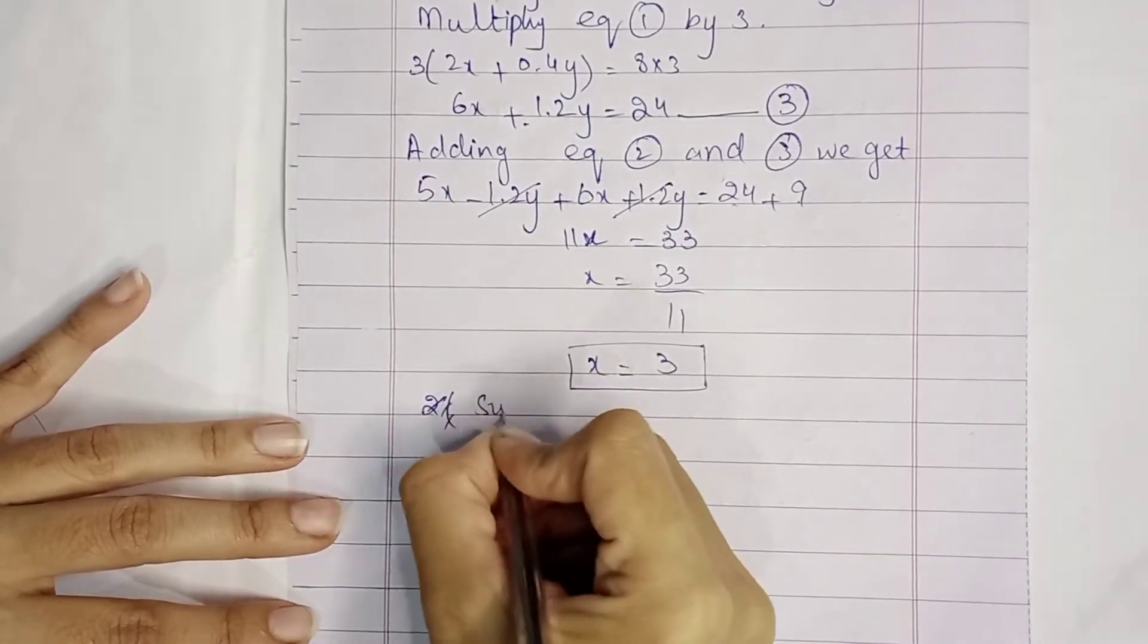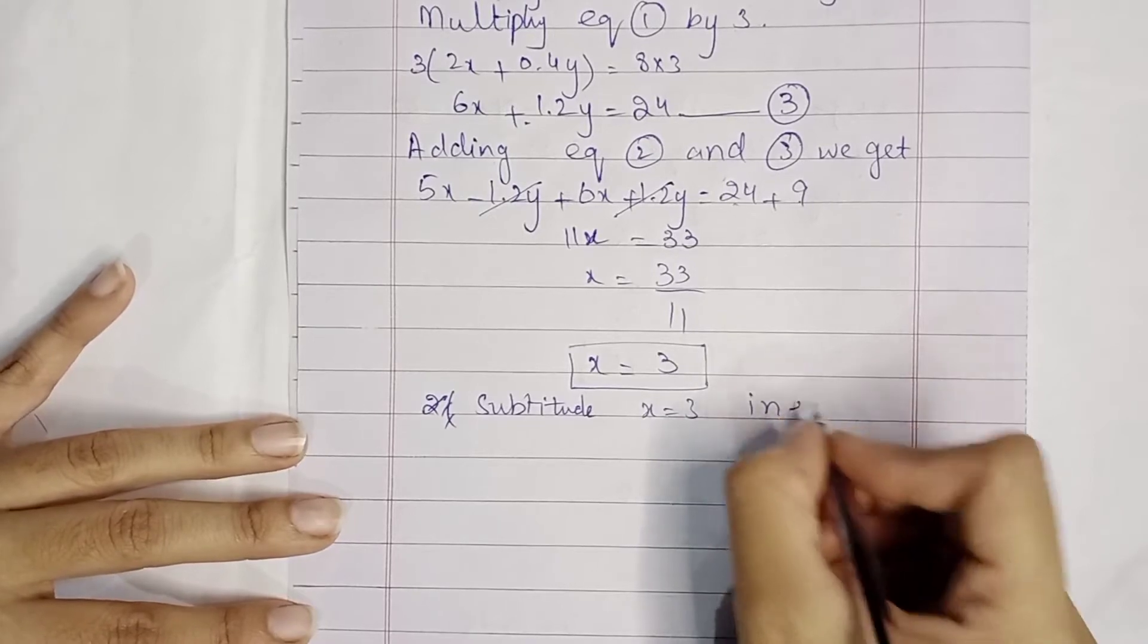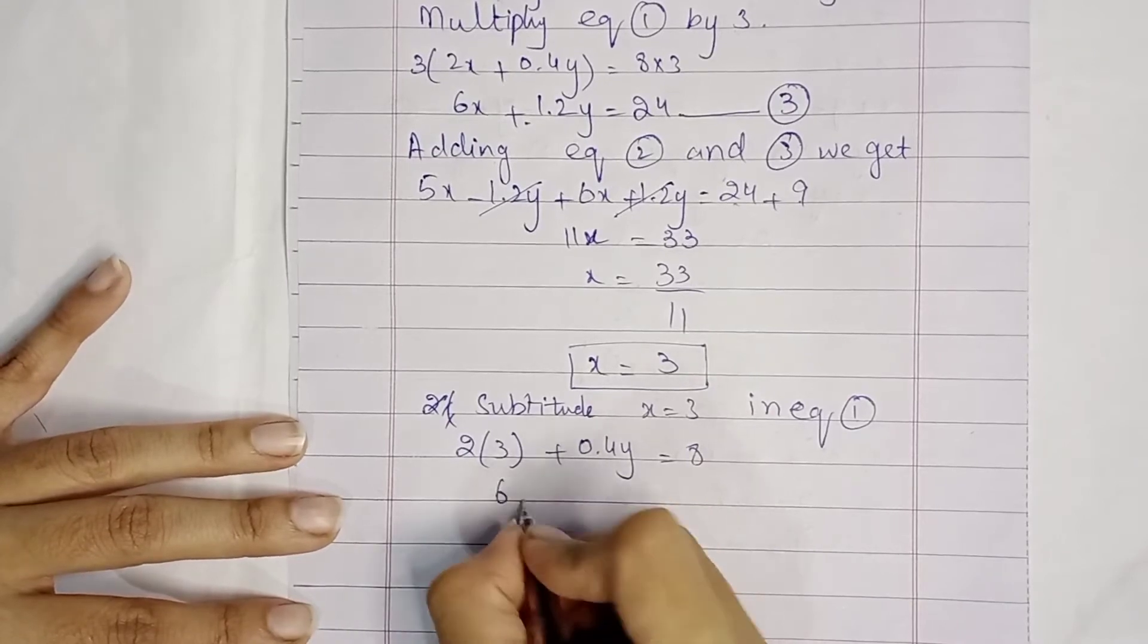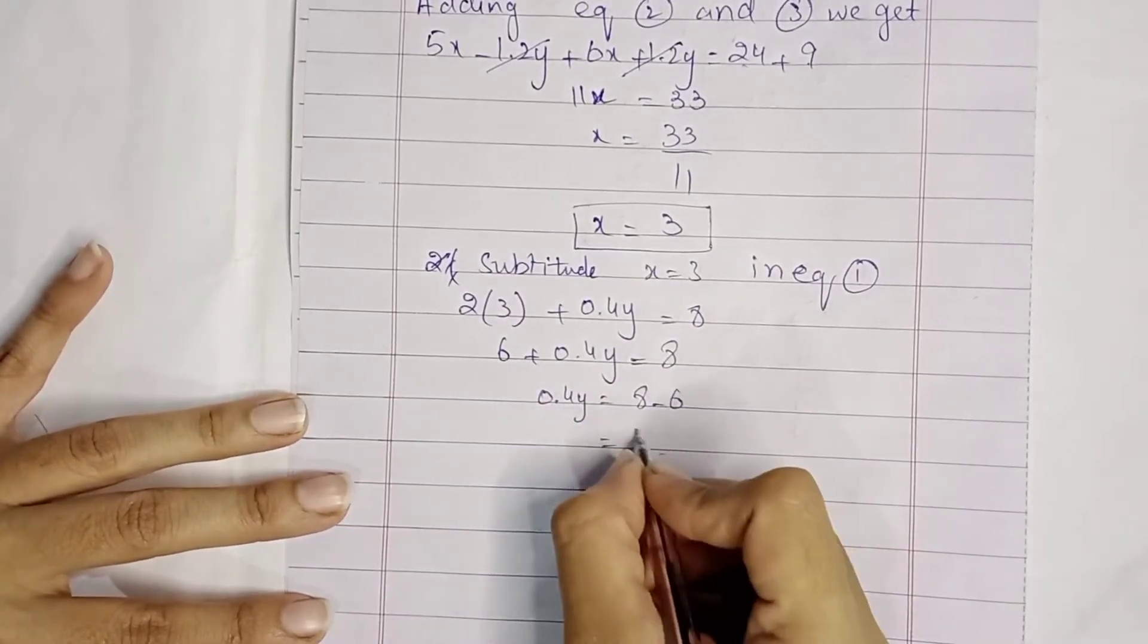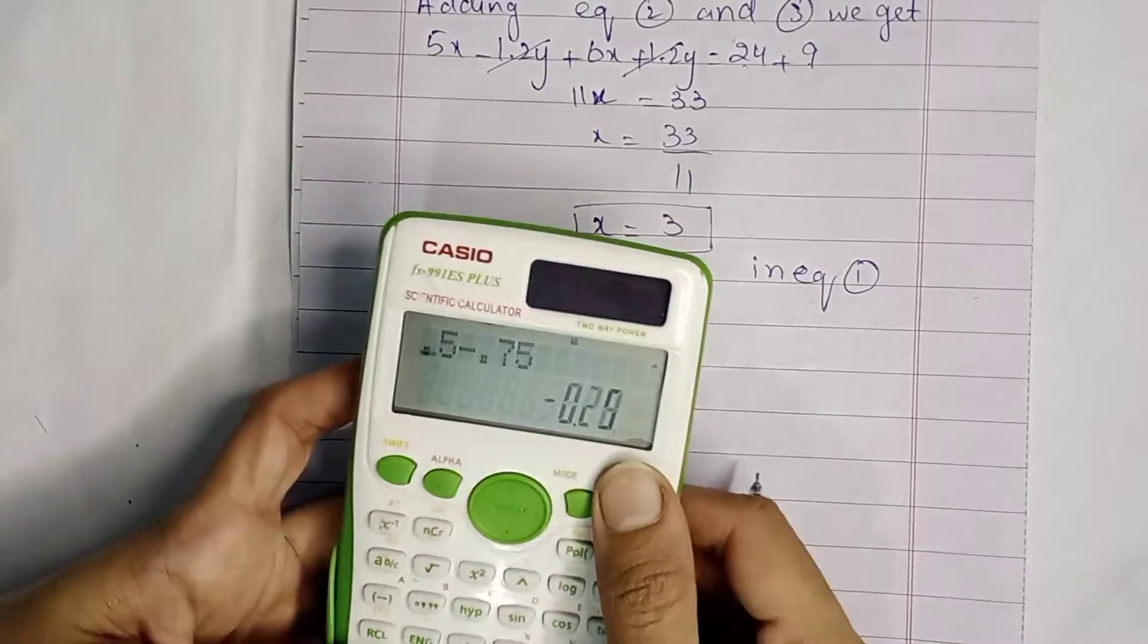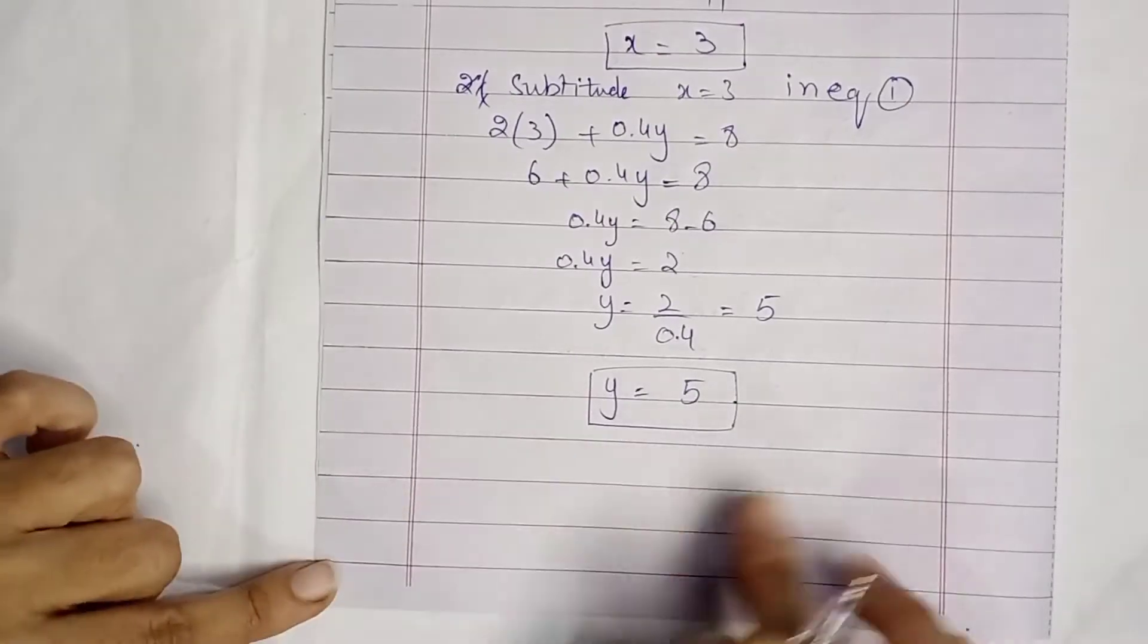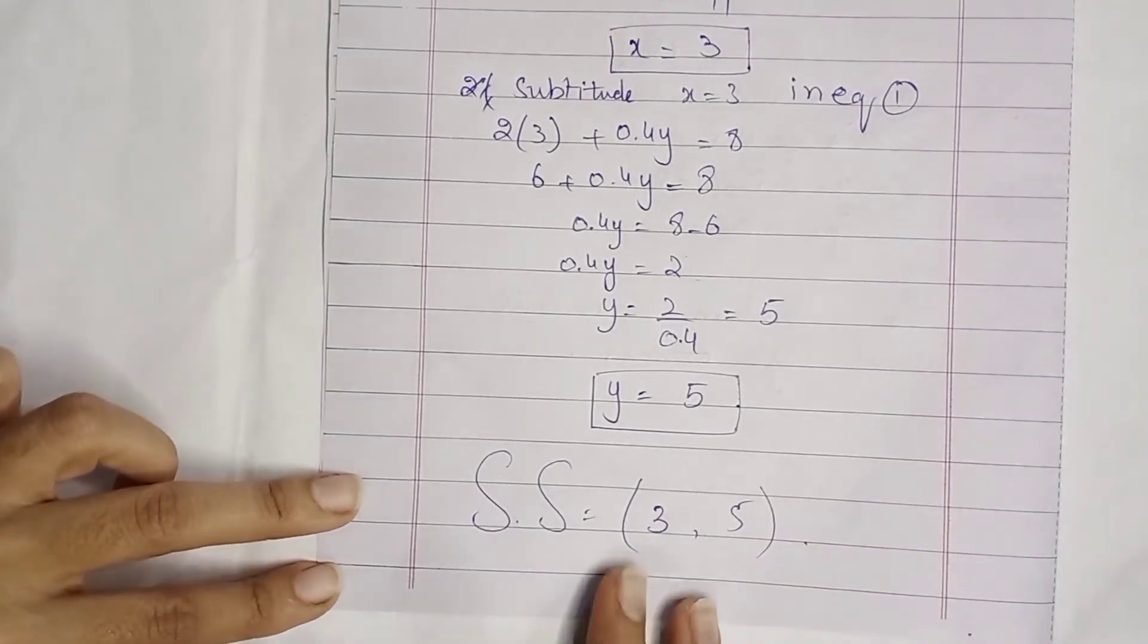33 over 11 gives x equals 3. Now we substitute x equals 3 in equation 1. 2(3) plus 0.4y equals 10.5, so 6 plus 0.4y equals 10.5. 0.4y equals 4.5, then 2 divided by 0.4 gives y equals 5. Now part B is solved.